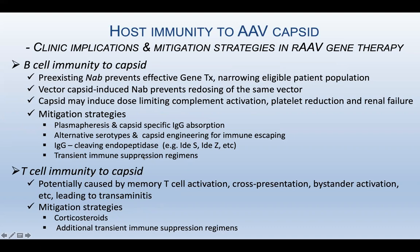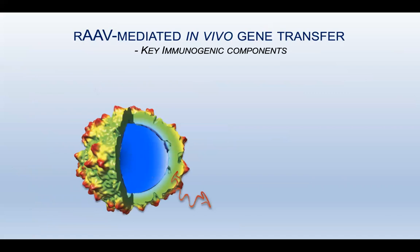In terms of T-cell immunity to the capsid, which is potentially caused by memory T-cell activation, cross-presentation, bystander activation, and other mechanisms leading to transient transaminitis — mitigation strategies include corticosteroids and additional transient immune suppression regimens.